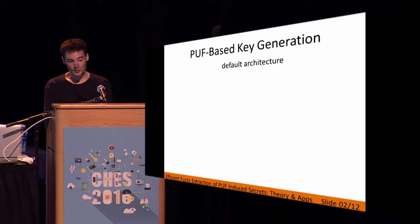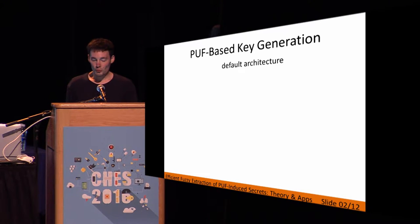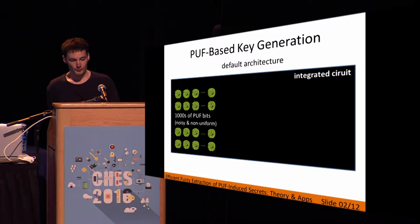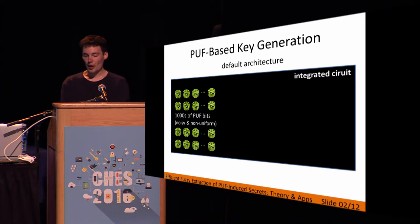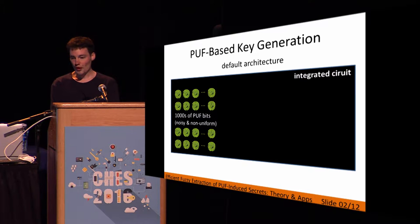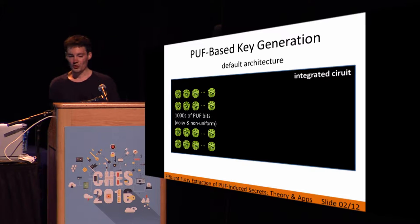This work is about PUF-based key generation, or also fuzzy extraction. For this problem, there is a default solution or a default architecture available. Suppose we have an embedded device — this embedded device is an integrated circuit, and this IC will house a PUF. The PUF will produce a device-unique fingerprint, similar to human biometrics, producing thousands of response bits.